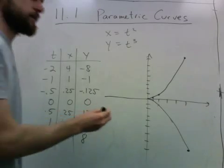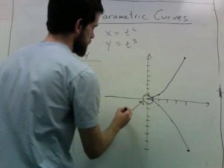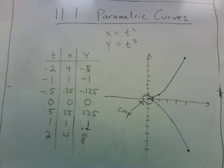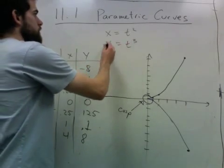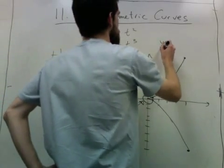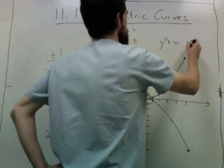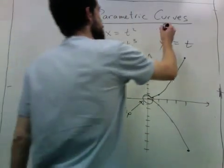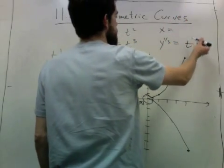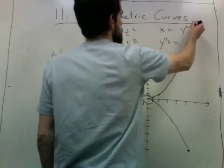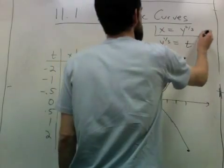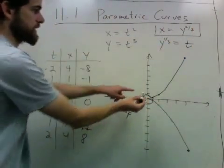The interesting thing about this curve is that it has a point called a cusp. We can also write down an equation for this curve without the parameter. Taking the cube root of both sides gives y to the one-third equals t, and plugging that back in for x gives x equals y to the two-thirds, which is exactly what this graph represents.